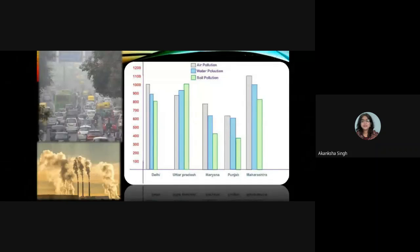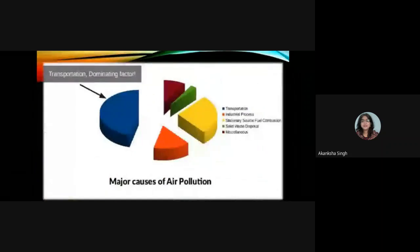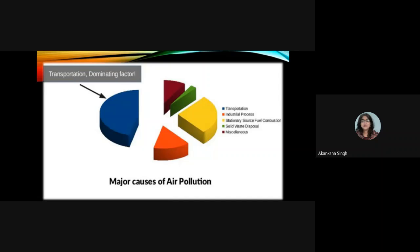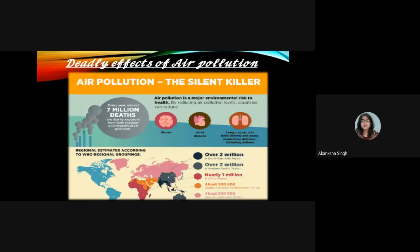Photographs show vehicles producing large amounts of carbon monoxide in the atmosphere, and factories in Germany harming the environment. A pie chart illustrates the causes of air pollution: the largest portion is produced by transportation, followed by industrial processes (orange), fuel combustion (yellow), solid waste disposal (green), and miscellaneous sources (brown).